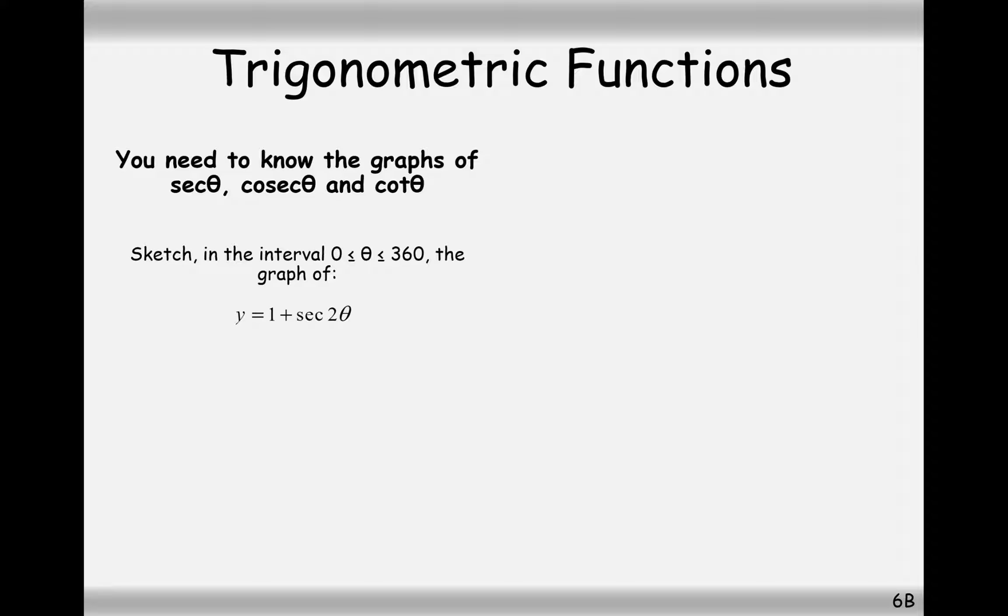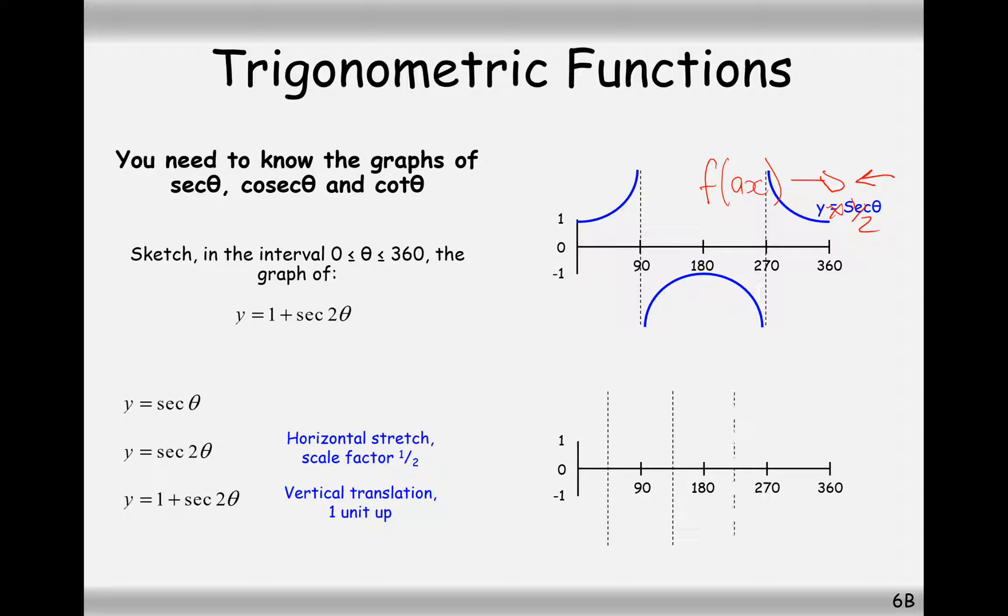The last thing we need to do in this section here is to just look at a few transformations to do with these types of graphs. So if you remember, the 2 that's inside the bracket with the sec function here is going to be a f of ax type transformation, which is going to squish it inwards by a scale factor of a half in this case, or 1 over a in general. And then the 1 on the outside is going to move it up by 1. So taking each of these transformations in turn, starting with the sec graph. Put in your asymptote first. And remember, everything's going to get squished in. So it was every 180, but now it's going to be every 90. So draw in your sec graph. This is your sec graph above. This is your sec 2 theta graph down below. And then move it up by 1 because there's a 1 plus on the outside. And that's our final answer.